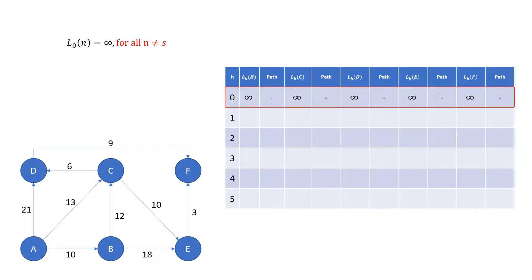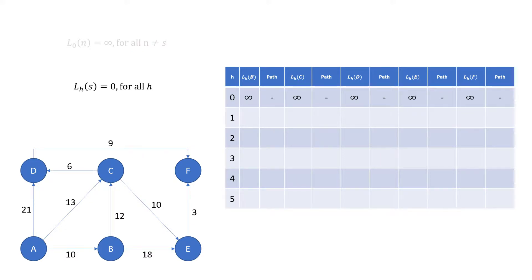The last part of the equation, for all n not equal to s, just means we're referring to all nodes that are not the starting node. As this table does not include an entry for the starting node, it just means that we're filling this value in for every node in the table.